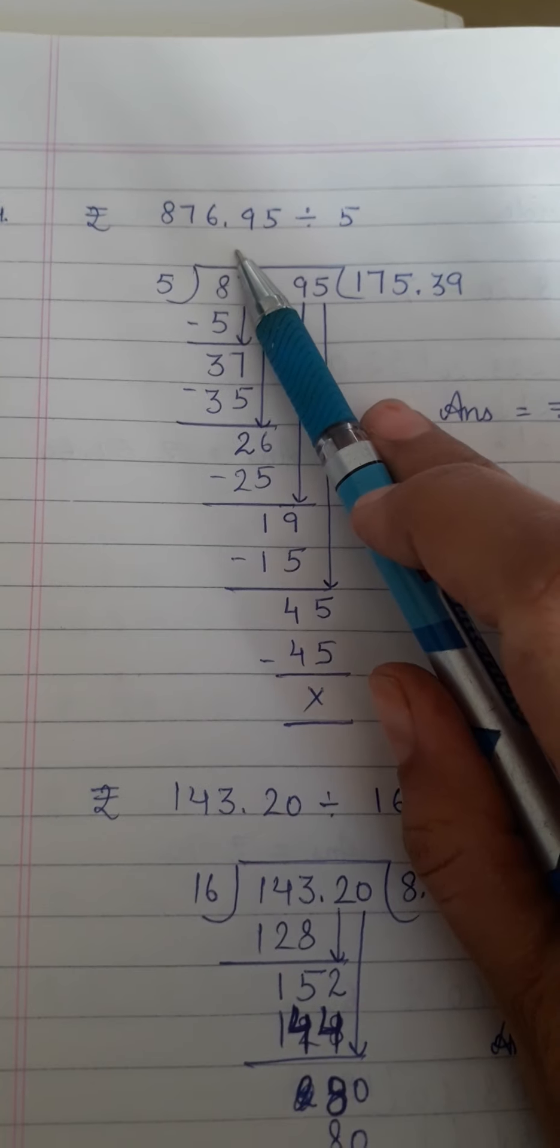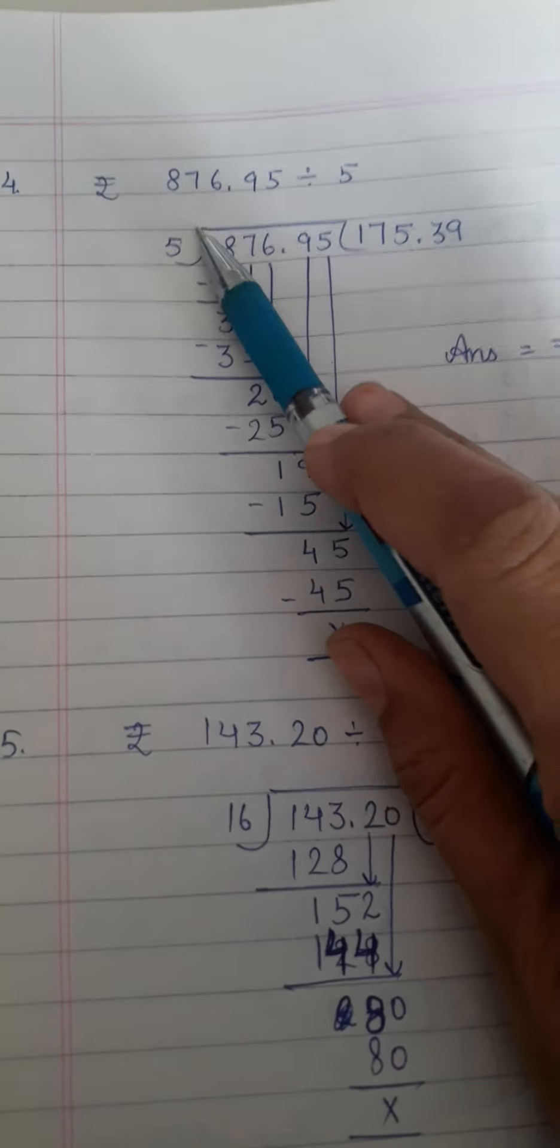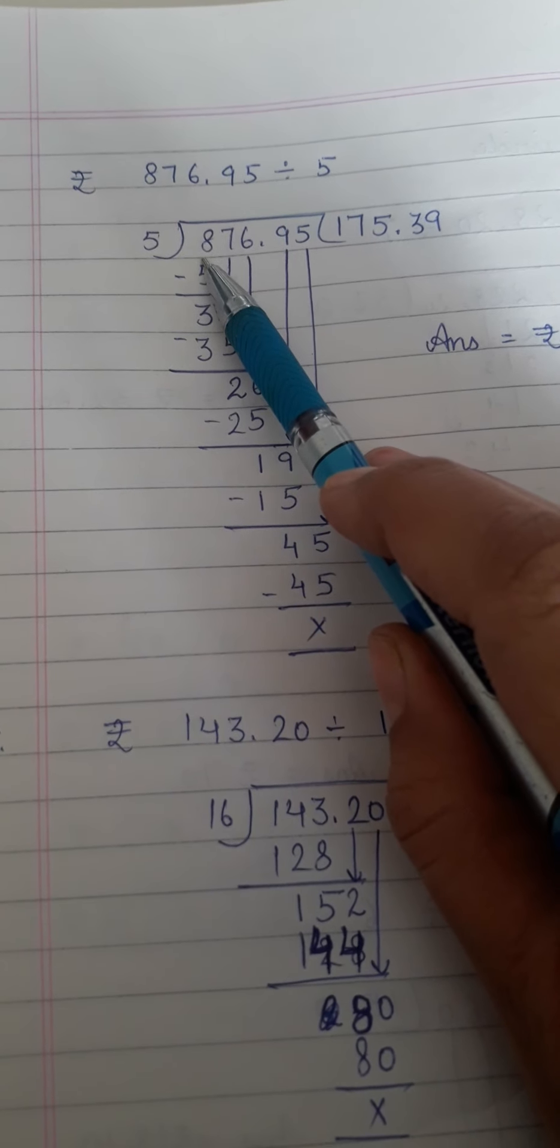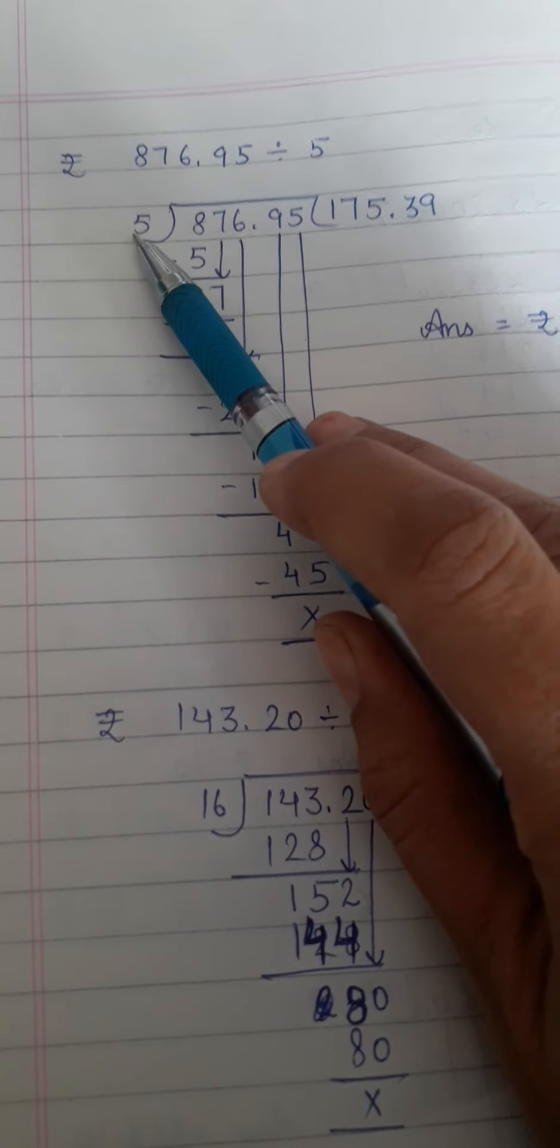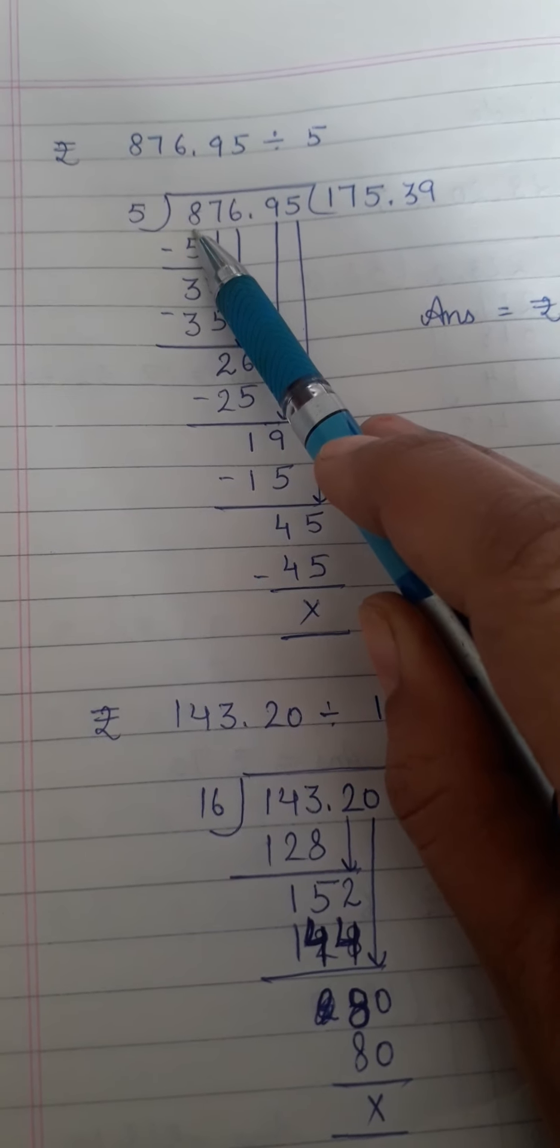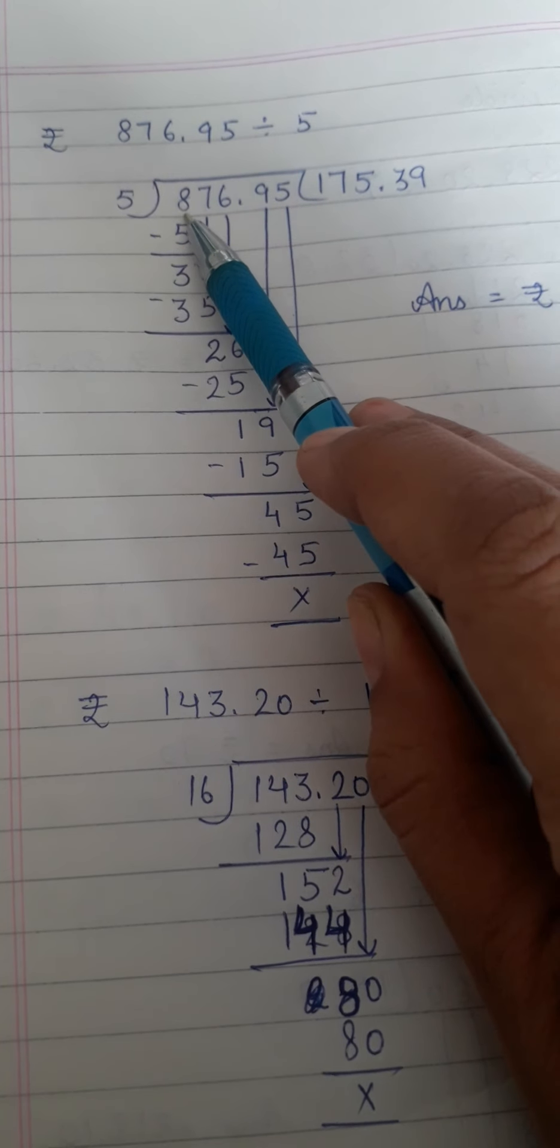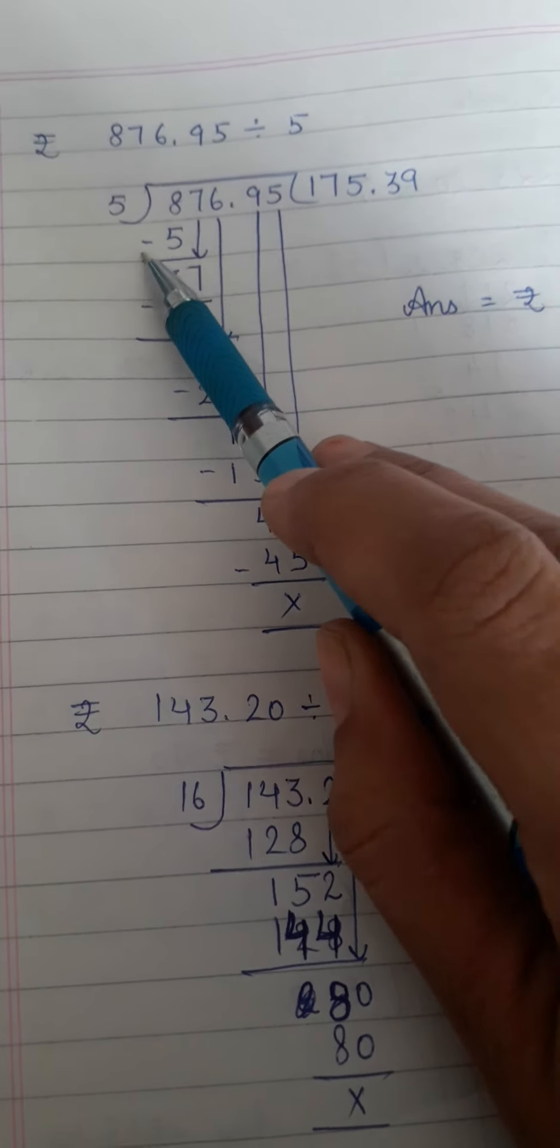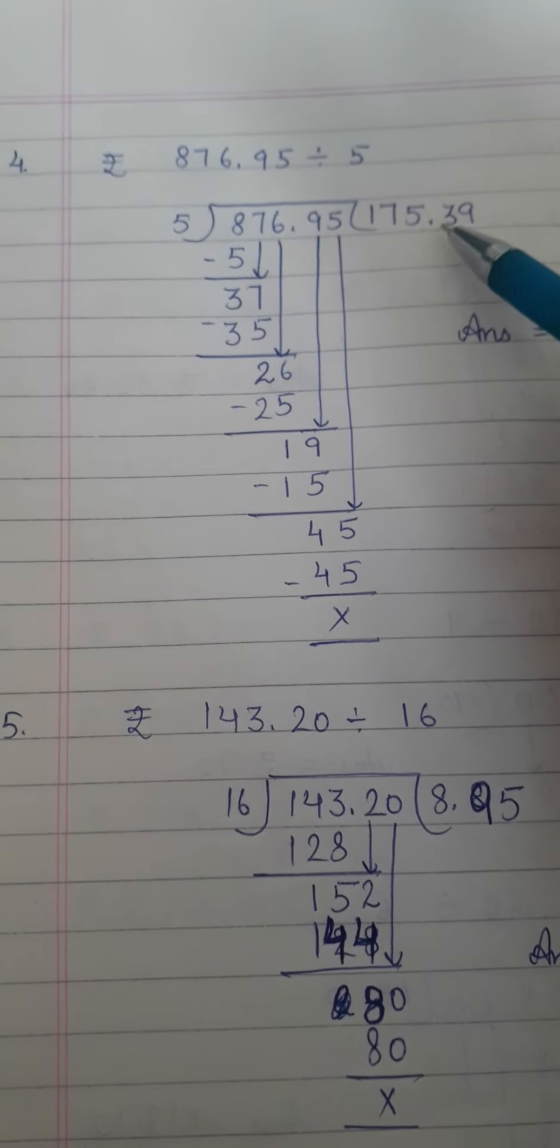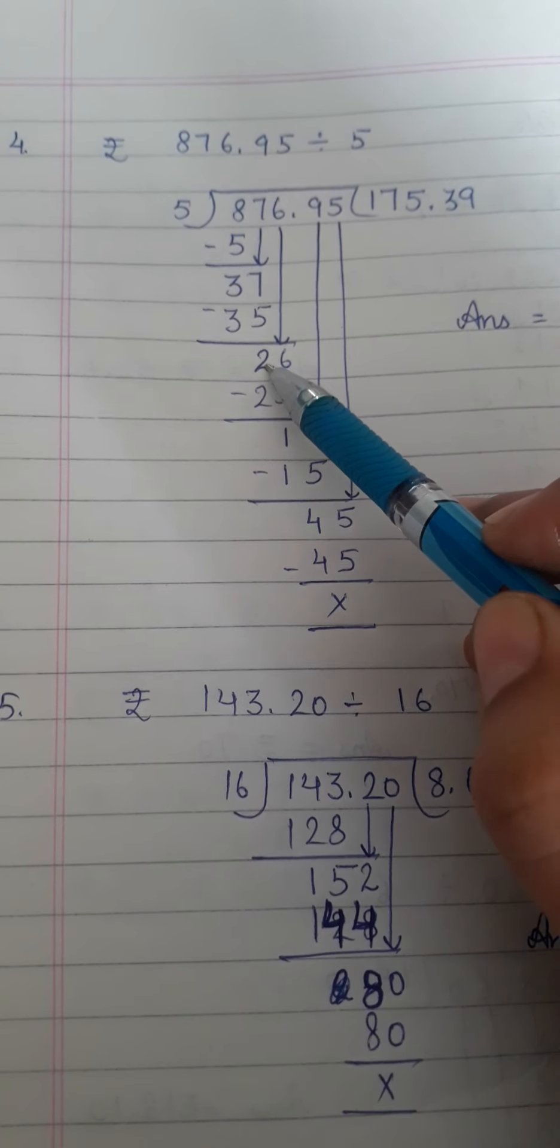Now divide 876 and 95 paisa by 5. So you have to divide by 5. First digit is bigger. So you will take a single digit. 8 is bigger than 5. 5 ones are 5. First we divided 8 by 5 table. 5 ones are 5, 5 twos are 10 which is bigger than 8. So 5 ones are 5. Minus gives 3 left. Bring down 7 from top. 5 sevens are 35. Minus gives, 7 minus 5 is 2.